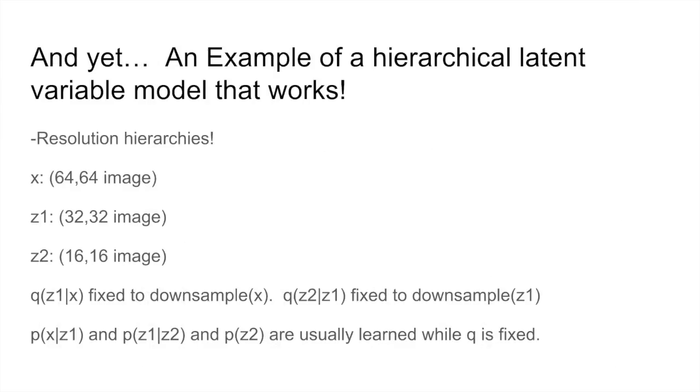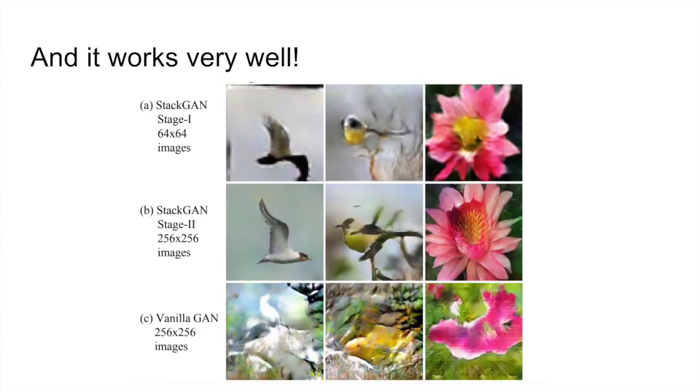And yet there is an example of a hierarchical latent variable model which obeys the optimality condition and yet which is also quite valuable. That's the resolution hierarchy. These models start from a low resolution generated image and progressively generate the image at higher resolutions while conditioning on a slightly lower resolution version of the image. You can see some examples here of a model which generates at 64 by 64 and then has a model which generates at 256 by 256 conditioned on the 64 by 64 image. And as you can see, this works considerably better than generating directly at 256 by 256.